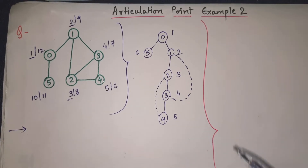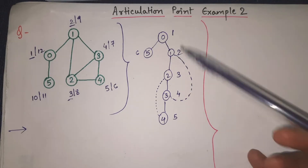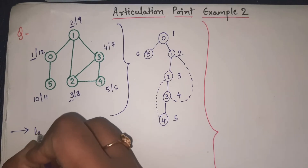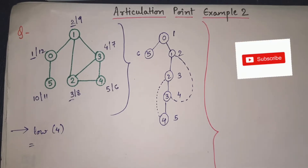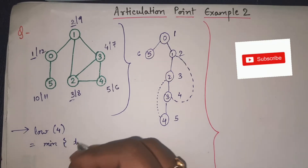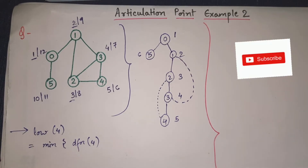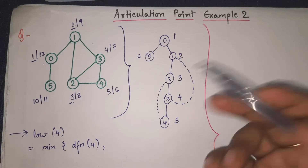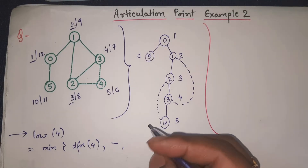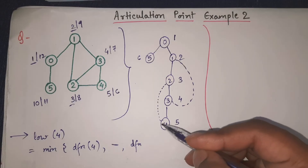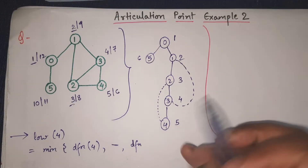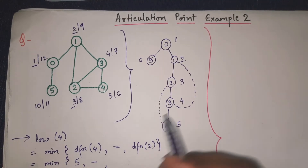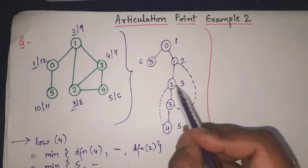Always start with leaf nodes. Here the two leaf nodes are 4 and 5. For low(4): it equals min( dfn(4), dash (no child), dfn(2) ) because node 4 has a back edge to node 2. dfn(4) = 5 and dfn(2) = 3, so low(4) = min(5, 3) = 3.